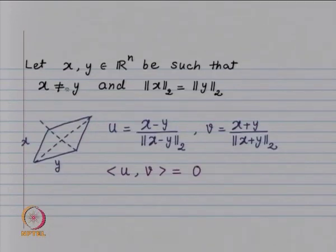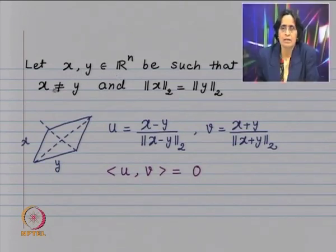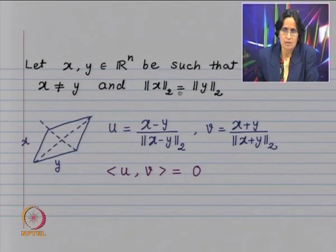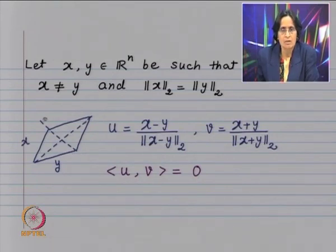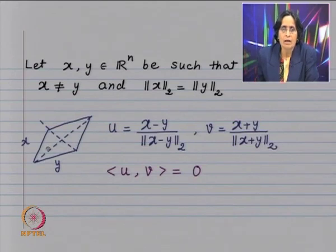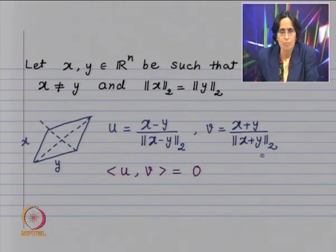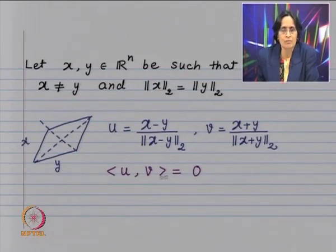Let me recall the reflectors. If you have two vectors in R^n such that x is not equal to y and the Euclidean norm of x and y are the same, then we look at the parallelogram with sides x and y. The diagonals of this parallelogram are given by vector x plus y and vector x minus y. We consider a unit vector in the direction of x minus y, given by u equals (x minus y) divided by its norm, and v is a unit vector along the other diagonal: v equals (x plus y) divided by its norm. These two unit vectors u and v are perpendicular, so the inner product of u with v equals zero.